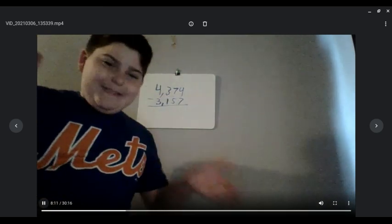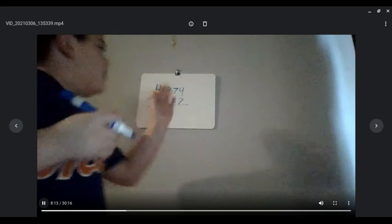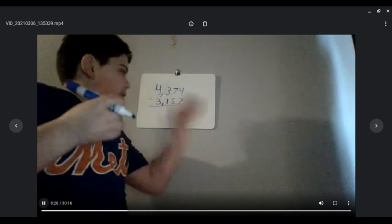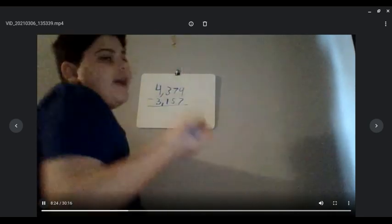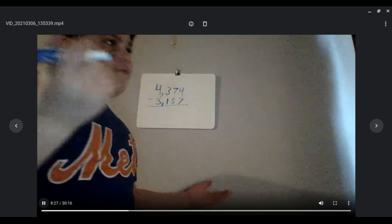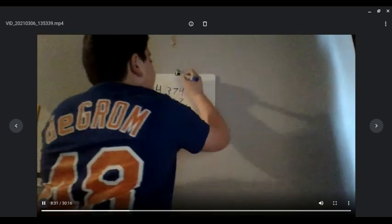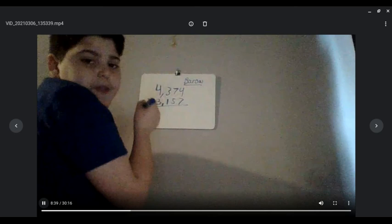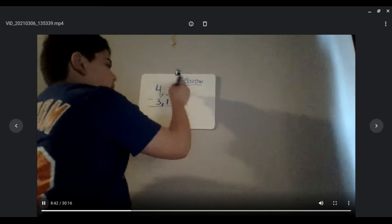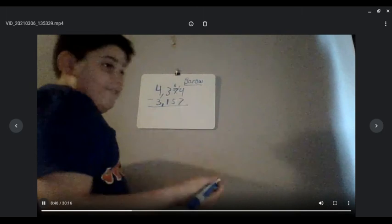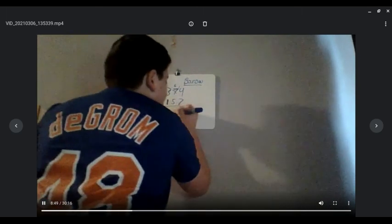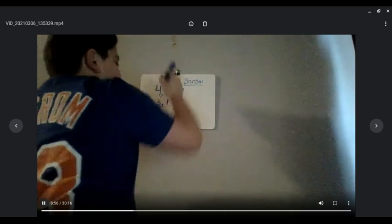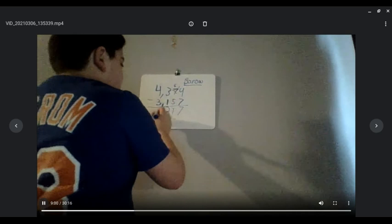Okay, that should have been about 10 seconds. So now we're going to do 4 minus 7 — you can't do that. So we're going to borrow from 7, get 6, carry the 1, making it 14. Half of 14 is 7, so we get 7. And then we have to minus 5 from 6, which is 1. Now we have to minus 1 from 3, which is 2. Minus 3 from 4, which is 1. That gives you 1,217.